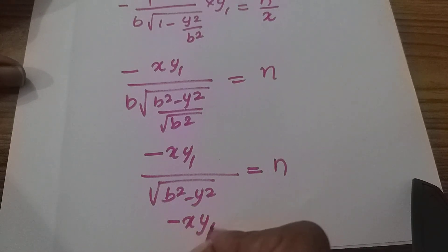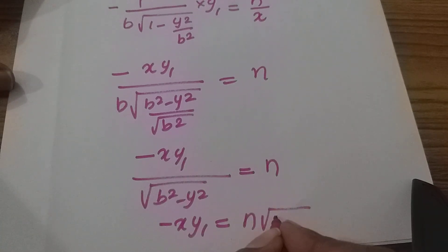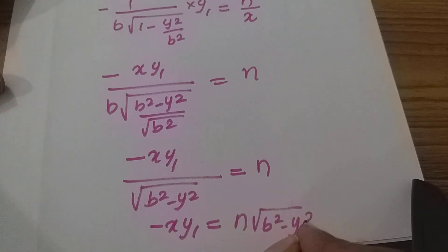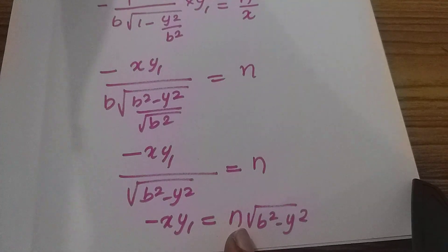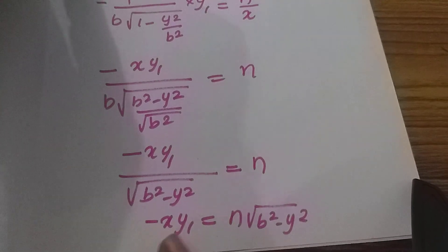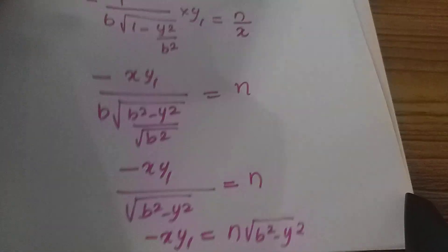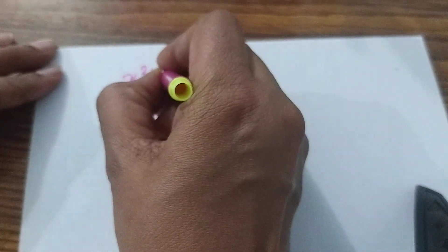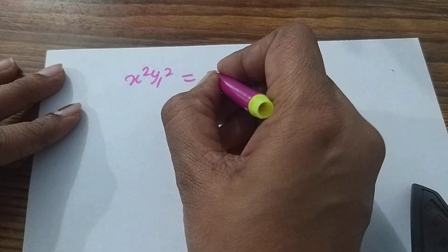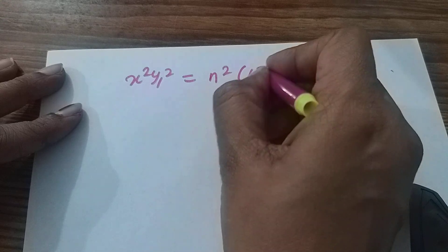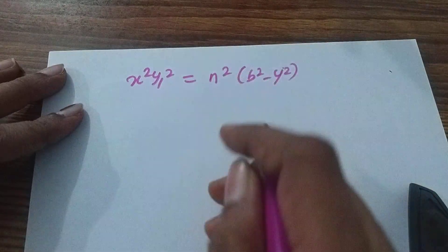Cross-multiplying: minus x·y1 is equal to n times root b square minus y square. Since there is a root, we square both sides. Therefore, x square y1 square is equal to n square times b square minus y square.